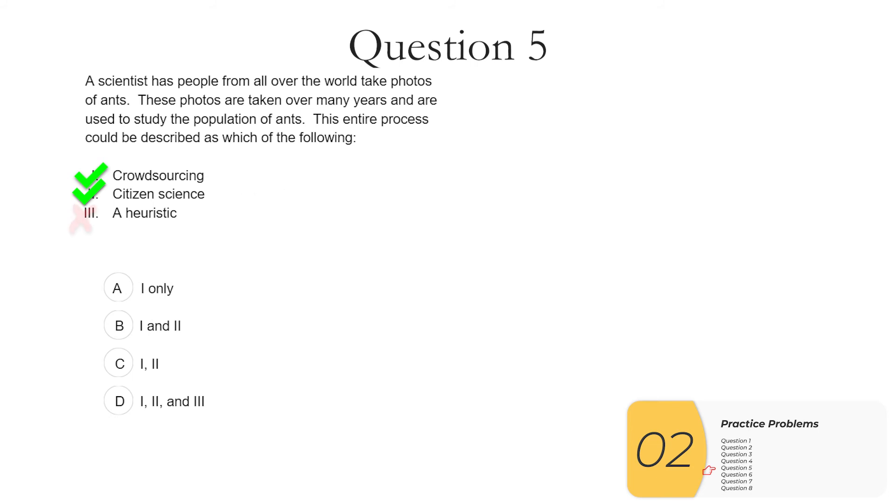Three, a heuristic. This is one of those times when the AP board will throw these definitions at you just to try to confuse you, but it's not that. So because one and two are true, the answer is B, one and two only.